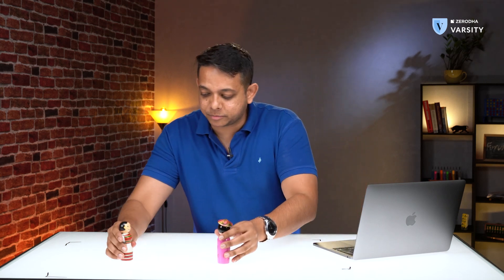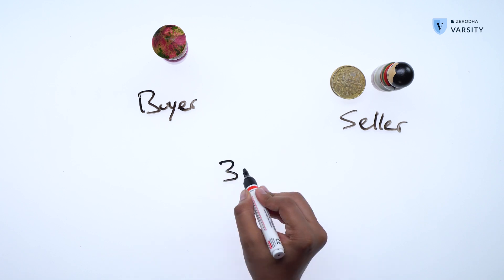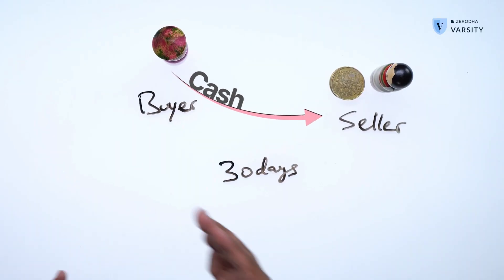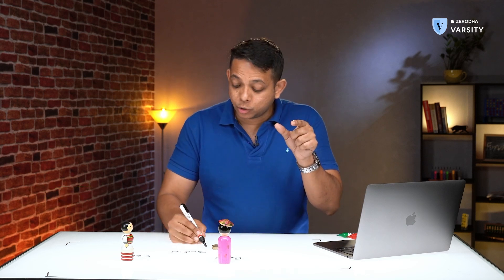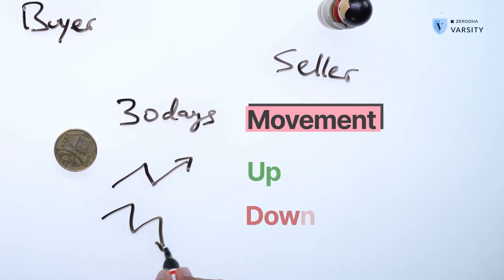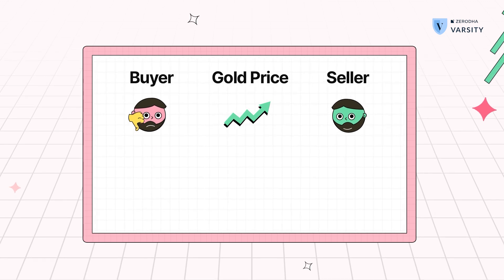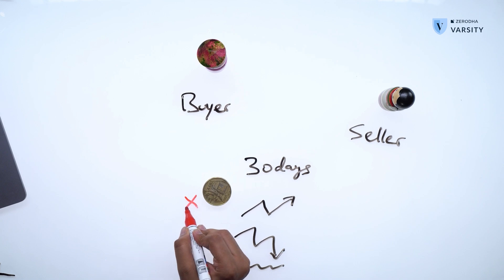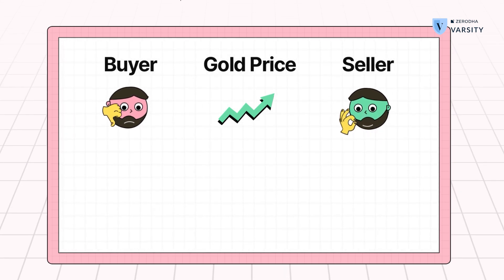A forwards contract is an agreement between two people. We have a buyer who wants to buy gold and we have a seller. In this contract, the actual transaction will take place 30 days from now — sometime in the future — where the buyer pays cash in lieu of getting the gold. There are three possibilities at the end of 30 days: the price of gold could have gone up, gone down, or remained sideways. If the price went up, the buyer wouldn't want to pay a higher amount and is less likely to go through with the transaction, whereas the seller loves it because the price is higher. This is a mismatch and is a problem.